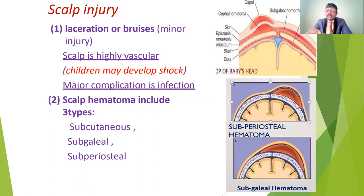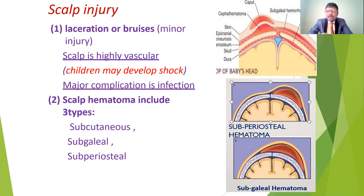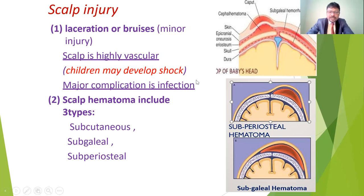Hematoma means accumulation of blood or a blood clot in one particular place. Laceration injuries are minor injuries because the scalp is highly vascular — in case of injury only to the scalp, there may be bleeding due to laceration. It is not a complicated injury; they will get only minor bleeding. But in case of heavy bleeding, especially in children, they may develop hypovolemic shock. In case of serious complications from blood loss and infections from the wound, they may get major complications.